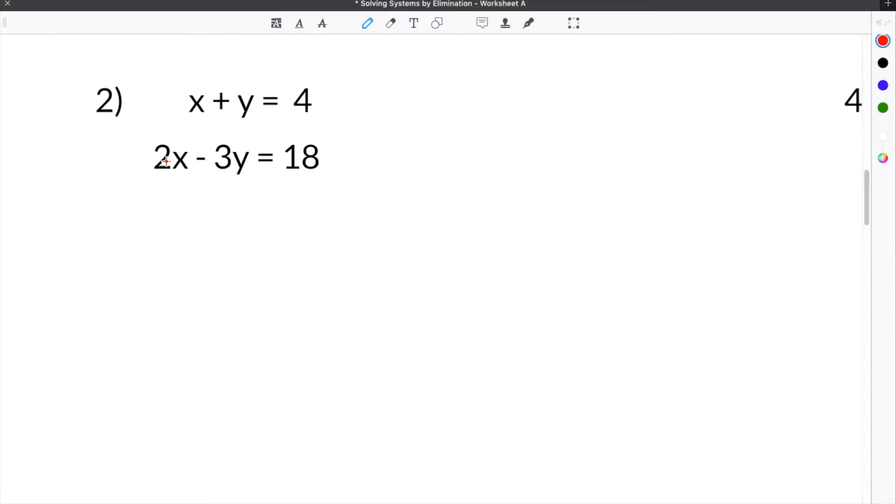The next problem on our solving systems of equations by elimination worksheet is number 2. We have x plus y equals 4, and then 2x minus 3y equals 18.